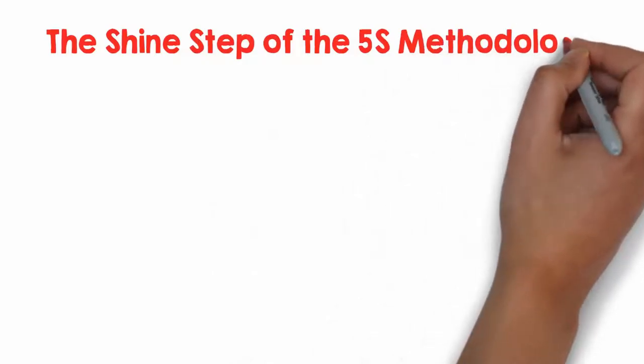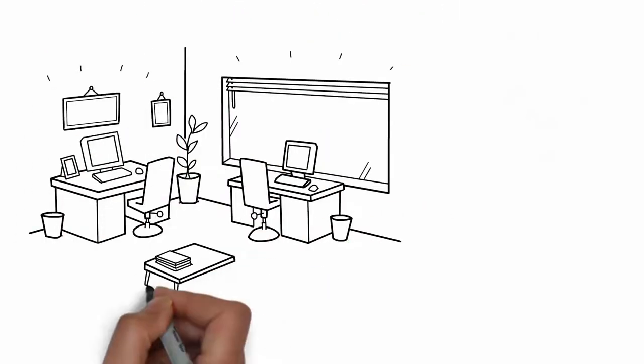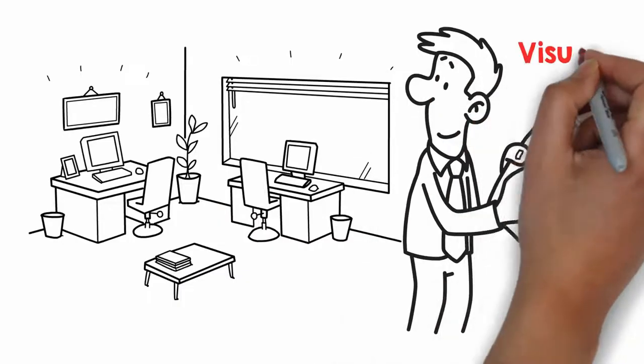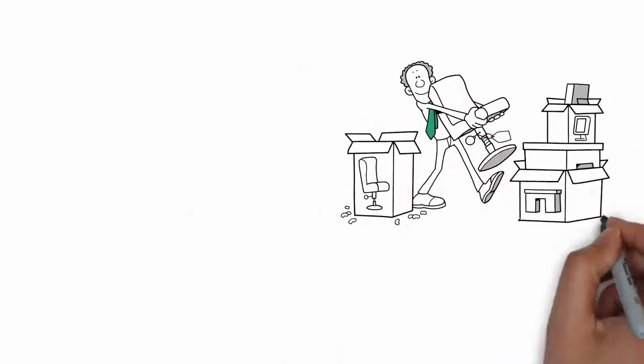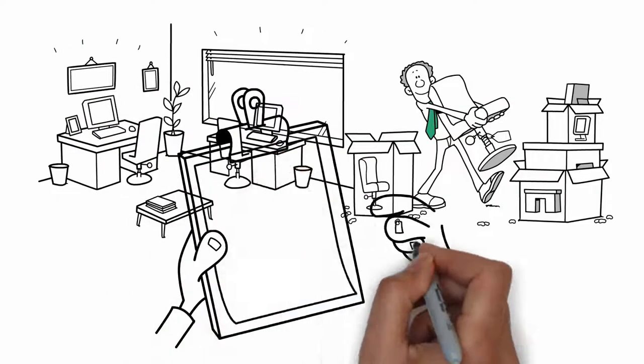The Shine step of the 5S methodology is often under-evaluated. This is not a simple physical tidy-up but has to be done as a visual control to correct immediately anything out of place and asking why.